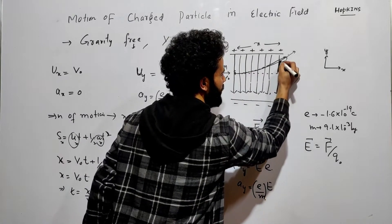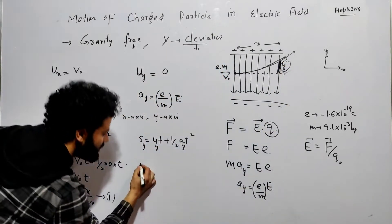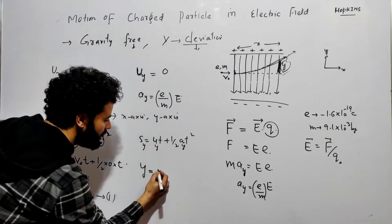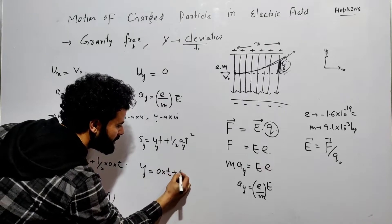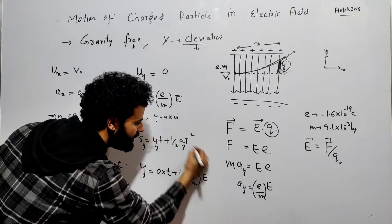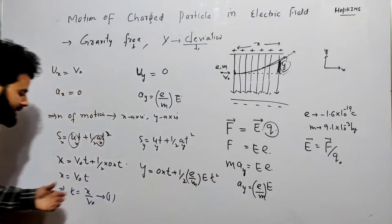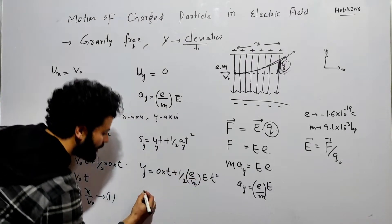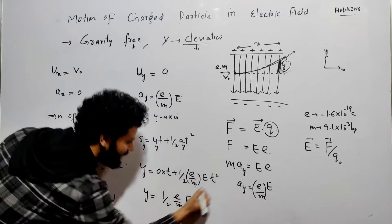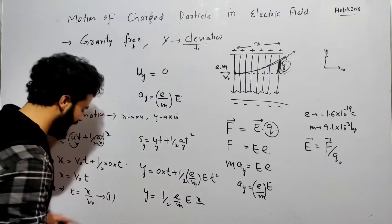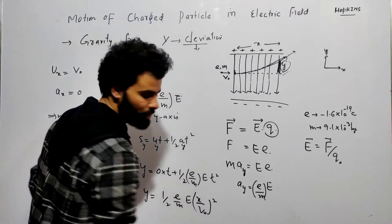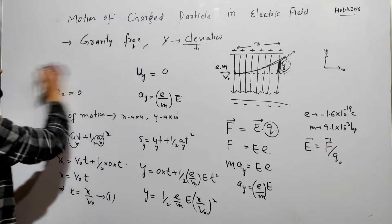Along the y-axis, the displacement y is the deviation we want to calculate. The initial velocity along y is zero, so: y = 0·t + ½·a_y·t². Substituting a_y = (e/m)·E and replacing t with x/v₀ from equation 1: y = ½·(e/m)·E·(x/v₀)².